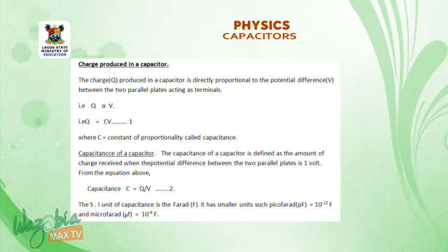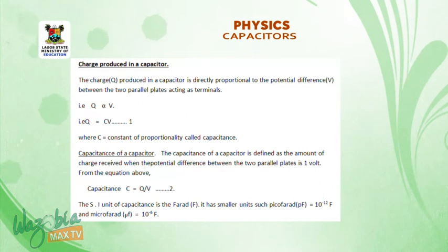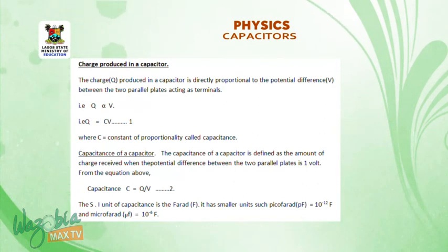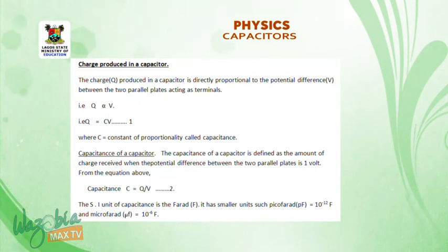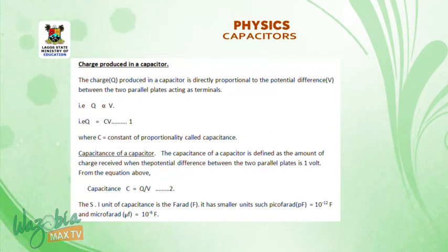Capacitance of a capacitor. The capacitance of a capacitor is defined as the amount of charge received when the potential difference between the two parallel plates is 1 volt. From the above equation, capacitance is equal to Q over V. The SI unit of capacitance is the farad. It has smaller units such as picofarad, which is 10 raised to negative 12 farad, and microfarad, which is 10 raised to negative 6 farad.